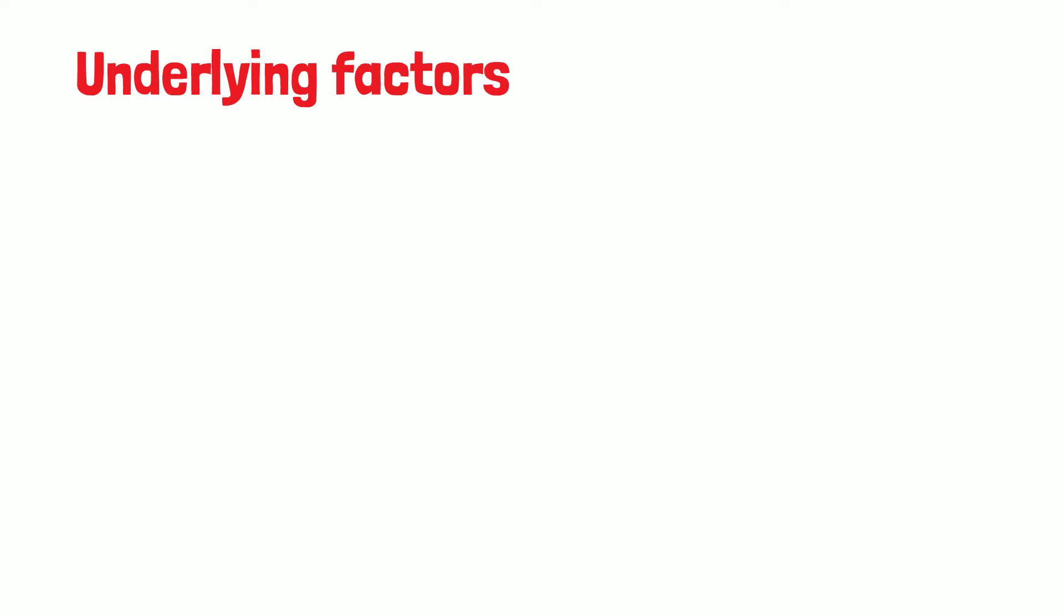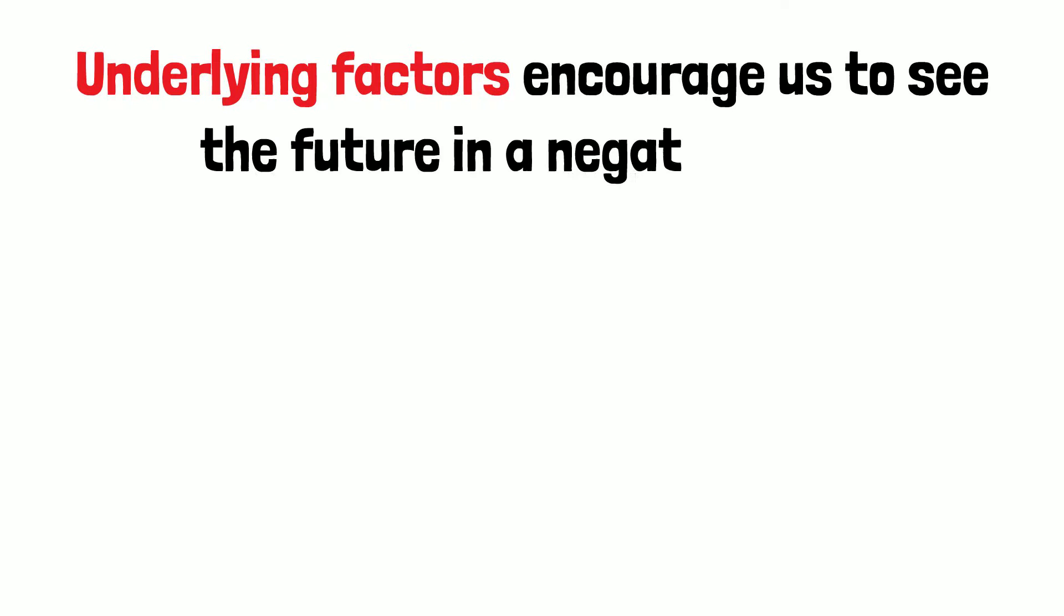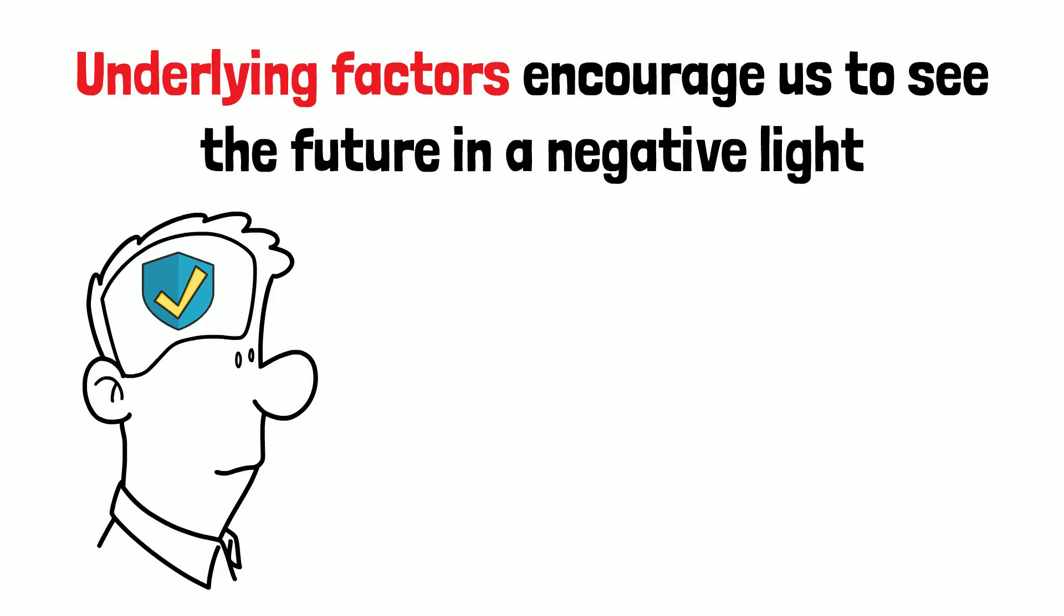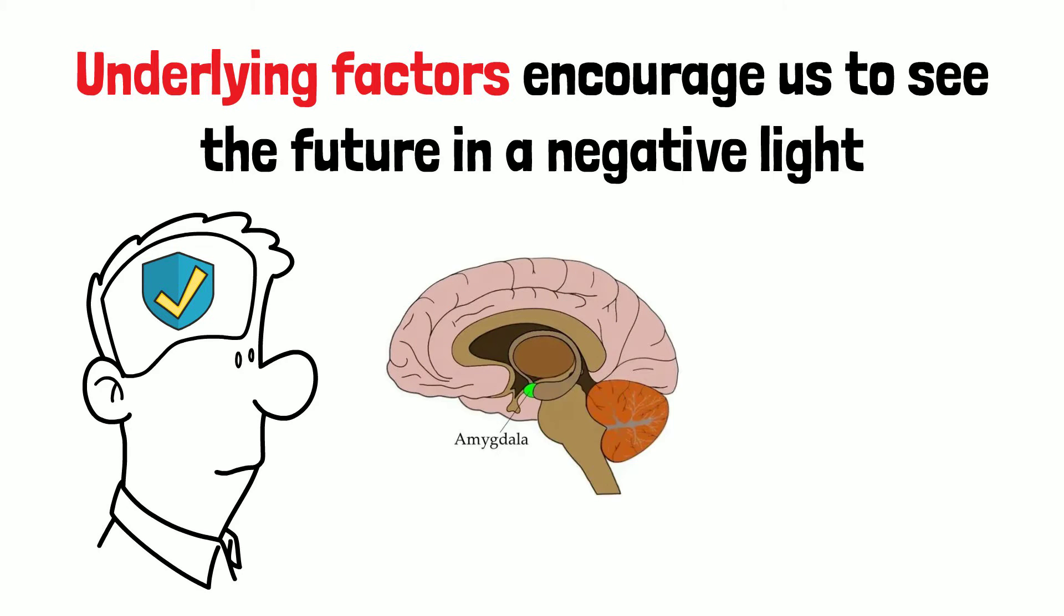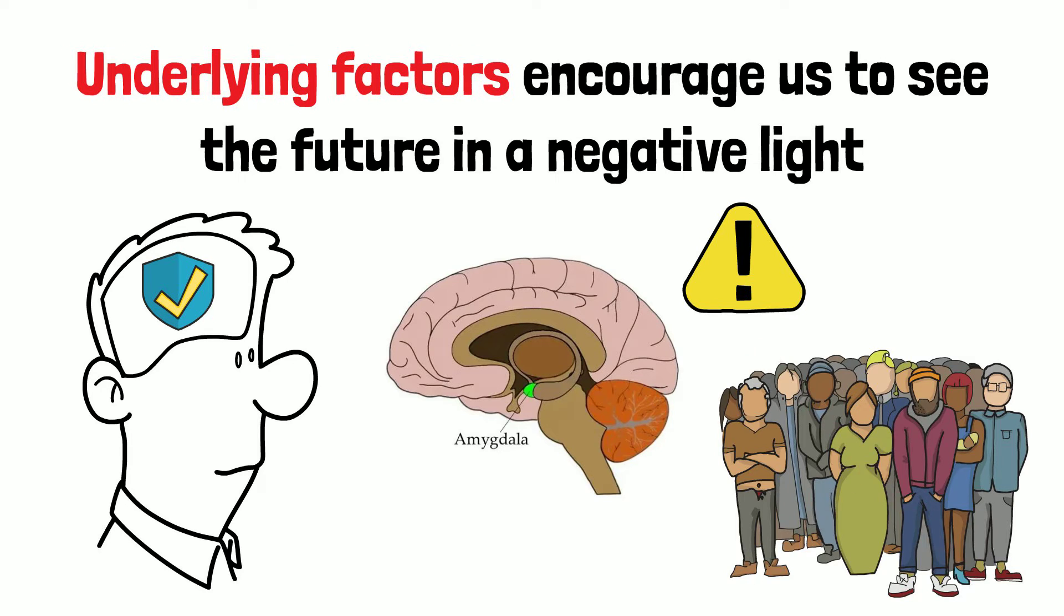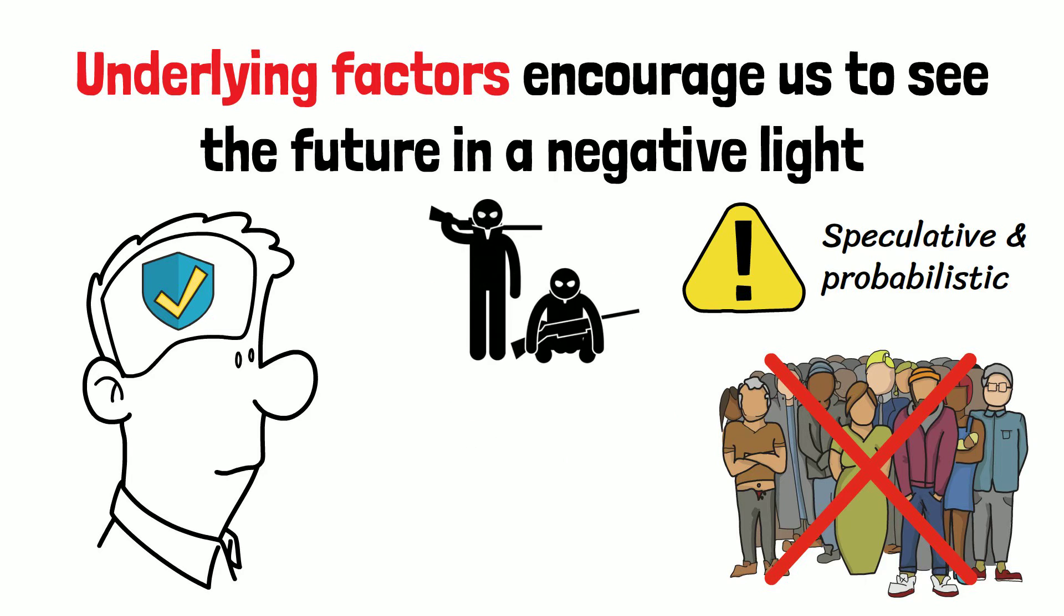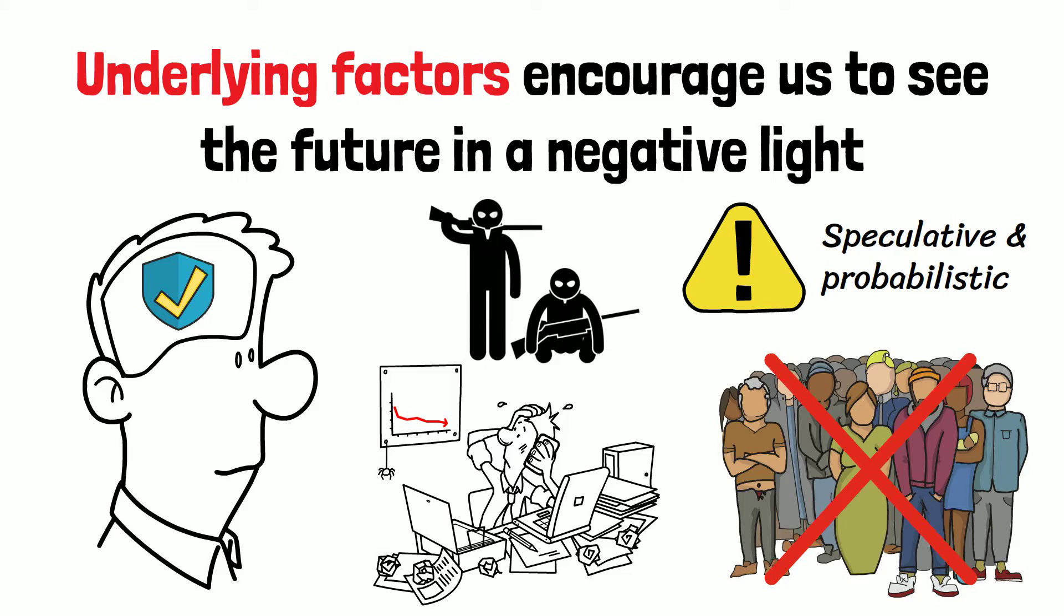In truth, underlying factors encourage us to see the future in a negative light. Our brains are constantly on guard for potential hazards, and the amygdala plays an important role in alerting us to potential threats. However, it is not as well suited to modern society when dangers tend to be more speculative and probabilistic, such as the possibility of a terrorist strike or a recession.